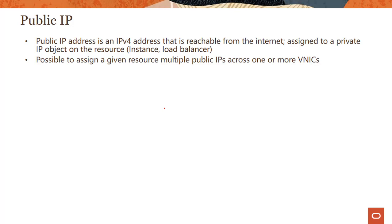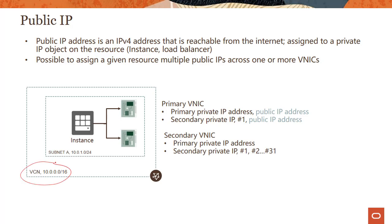Public IP is an IPv4 address reachable from the Internet. A public IP is assigned to a private IP object on a resource — whether it's an instance or a load balancer. It's possible to assign a given resource multiple public IPs across one or more VNICs. Each VNIC has a primary private IP and secondary private IPs, and each of these can optionally have a public IP, enabling complex private/public IP addressing schemes.